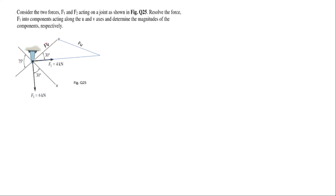We need to use either the sine rule or the cosine rule. We can use the sine rule, but for that we need three known values and one unknown. We have only one angle given directly, so we find the missing angle using alternate angles: 75 plus θ equals 180, which gives us this interior angle.